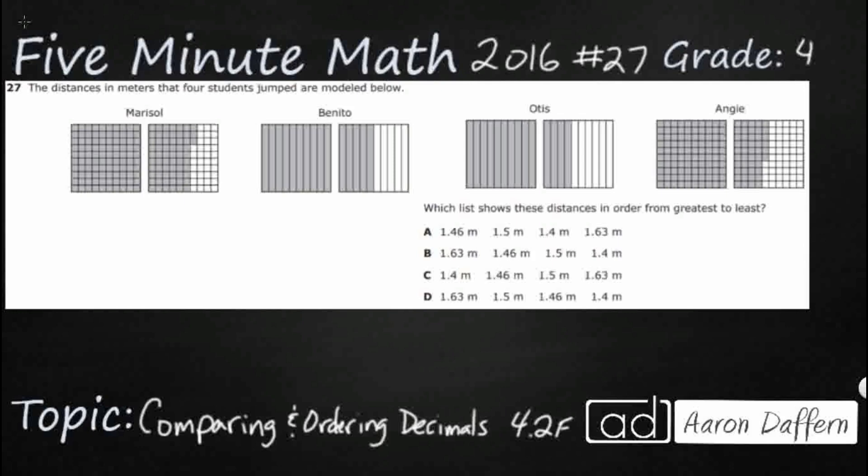So, we've got four different students: Marisol, Benito, Otis, and Angie, and we've got distances of how far they jumped, and we need to find these distances here, greatest to least.